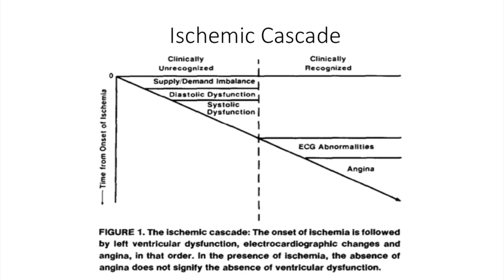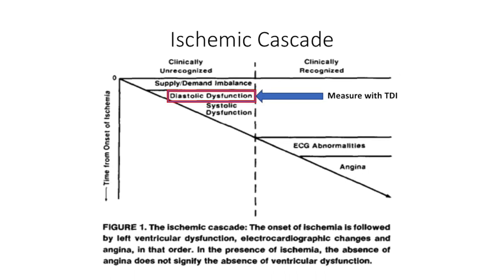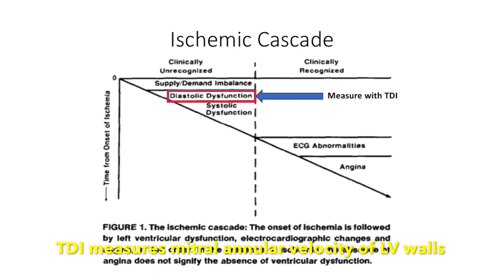TDI is able to do this because of the progression of the ischemic cascade. Patients undergoing an ischemic event are clinically diagnosed when they present with abnormal ECGs and often, but not always, chest pain. Before that, it begins with a supply-demand mismatch to the heart that progresses to diastolic dysfunction and then systolic dysfunction. TDI is capable of detecting diastolic dysfunction by assessing the mitral annular velocity of the four left ventricular walls, which is why TDI can assess risk of a cardiac event before it progresses to typical presentation.